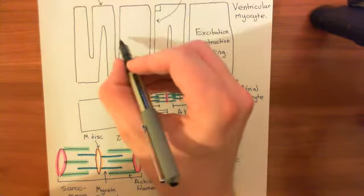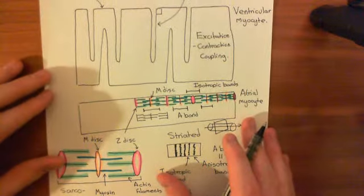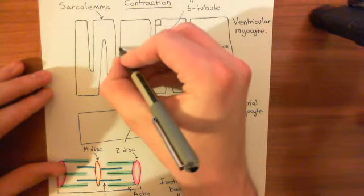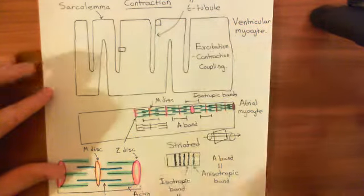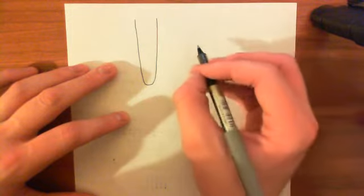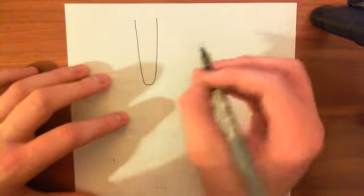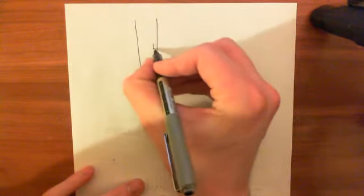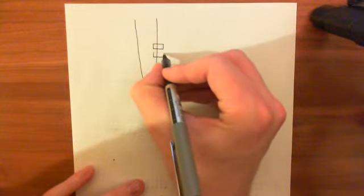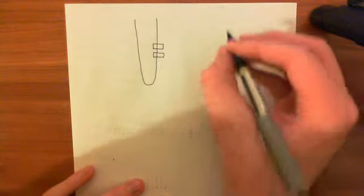In the T-tubule membranes, we have L-type voltage-gated calcium channels. In the case of the atria, we don't have T-tubules, and therefore this will just be at the normal cell membrane. So what we'll have is an L-type voltage-gated calcium channel.